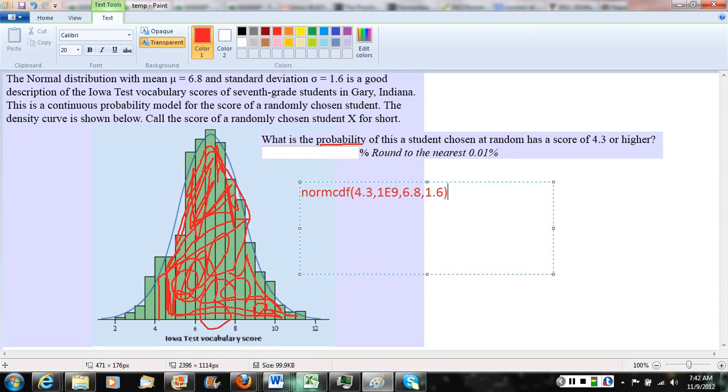So let's go ahead and do that on our calculator. So we do 2nd VARS, choose option 2 for normcdf, and we're going to put in 4.3, 1e9, 6.8, 1.6, and we hit enter. And the answer I get there is 0.9409.